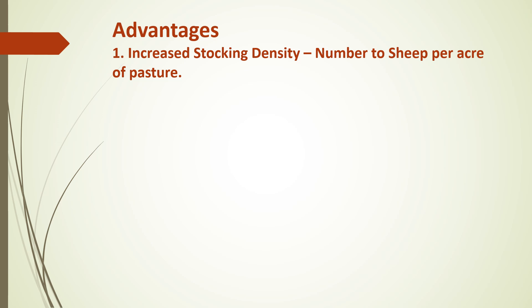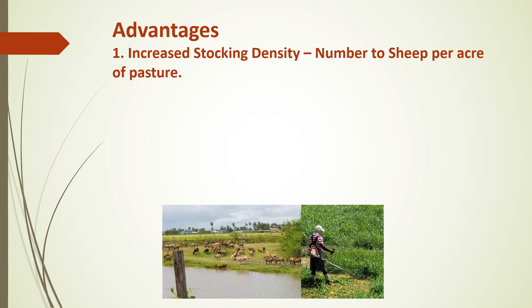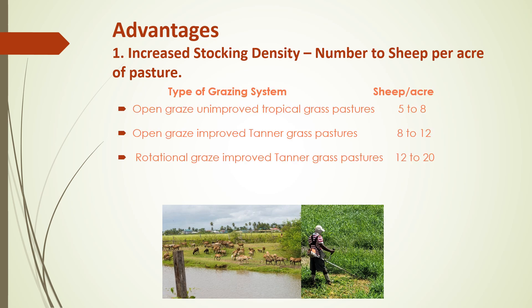There are many advantages of zero grazing sheep and housing them in a raised slotted floor pen. The first is increased stocking density, which refers to the number of sheep that you can continuously graze on an acre of pasture. This is probably the most significant advantage of the DeCampo model and varies greatly between grazing systems. As you can see, if you open graze on improved pastures, you can get between 5 and 8 sheep per acre.